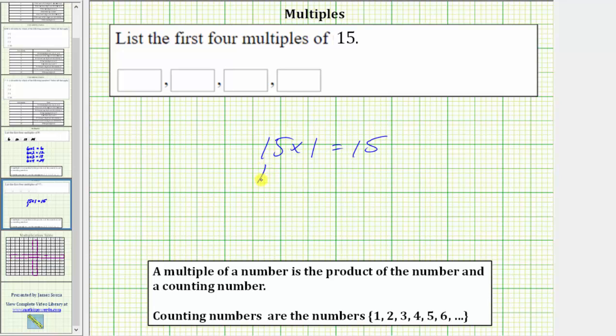The next multiple is 15 times two, which is equal to 30. The third multiple of 15 is 15 times three, which is equal to 45. And the fourth multiple of 15 is 15 times four, which equals 60.